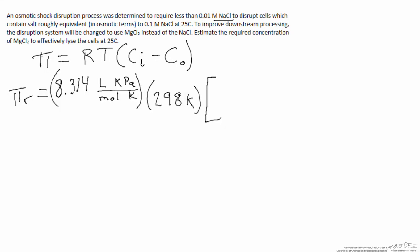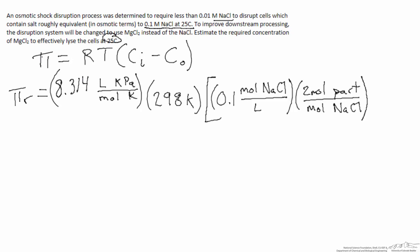Here we've begun to calculate the actual osmotic pressure required to lyse these cells, denoted as π_r, the required osmotic pressure. I've started filling in the gas constant and the absolute temperature, since we're given a temperature of 25°C. Now we need to determine the concentration of particles both inside and outside the cell. Inside, the cells have a salt concentration equivalent to an osmotic pressure similar to 0.1 molar sodium chloride. We take that 0.1 M and multiply by 2 moles of particles per mole of NaCl to get osmolarity inside, and do a similar conversion for the outside concentration.